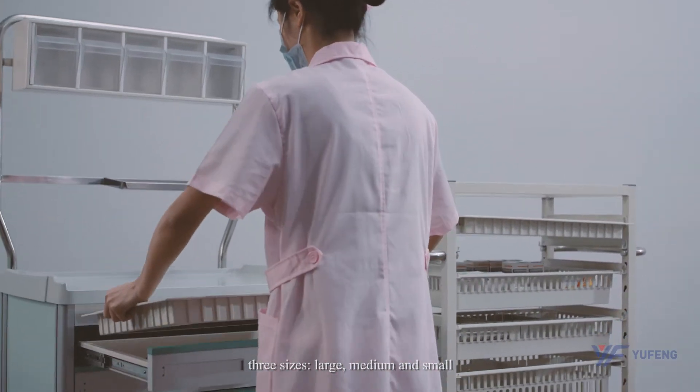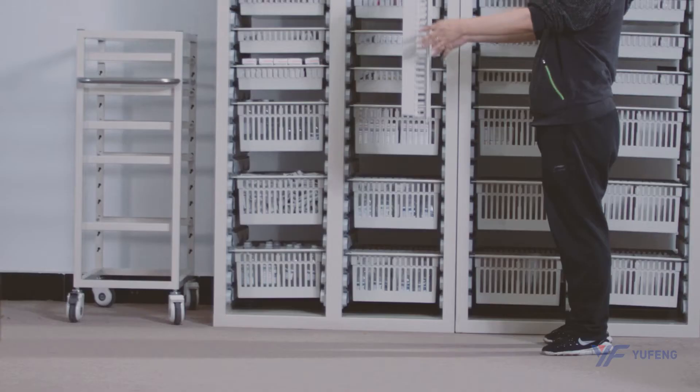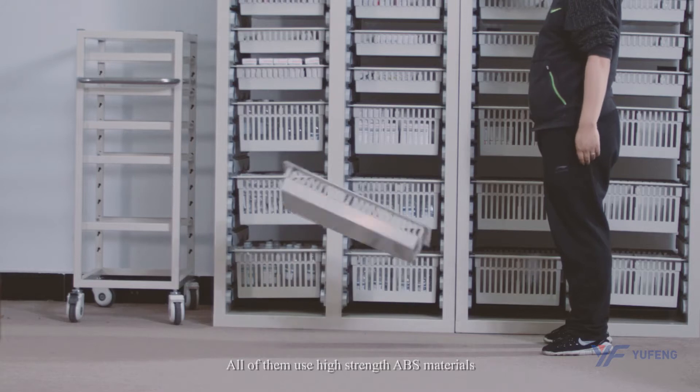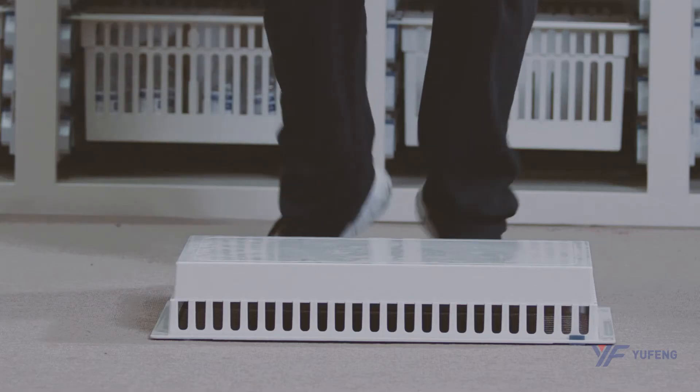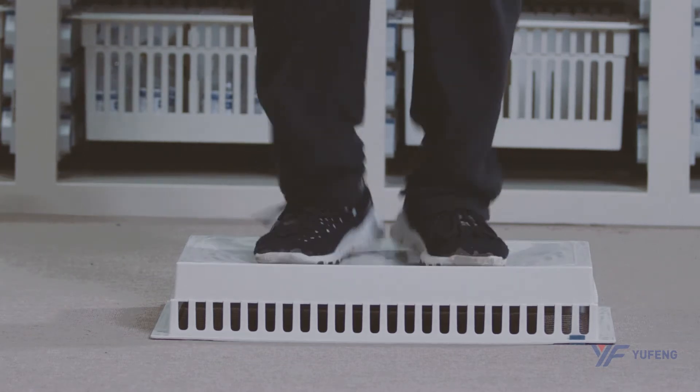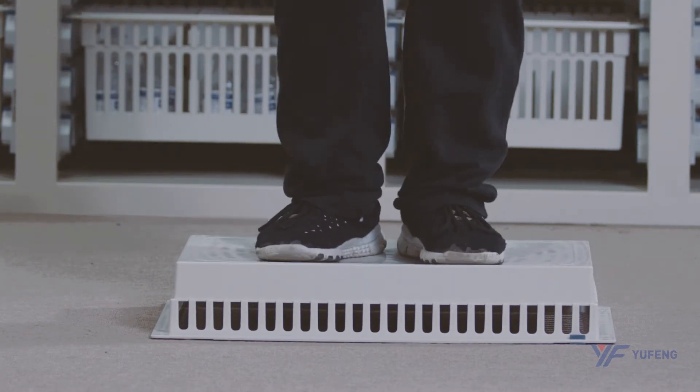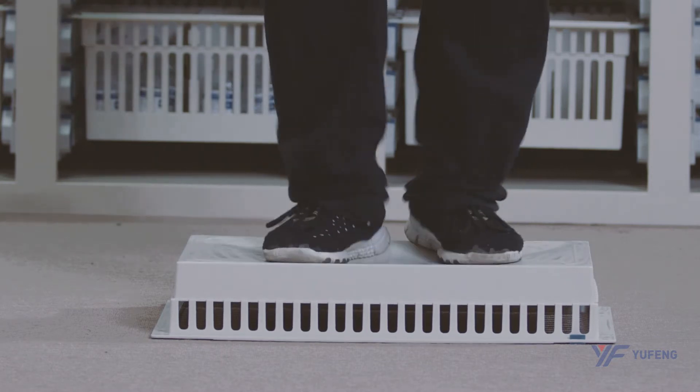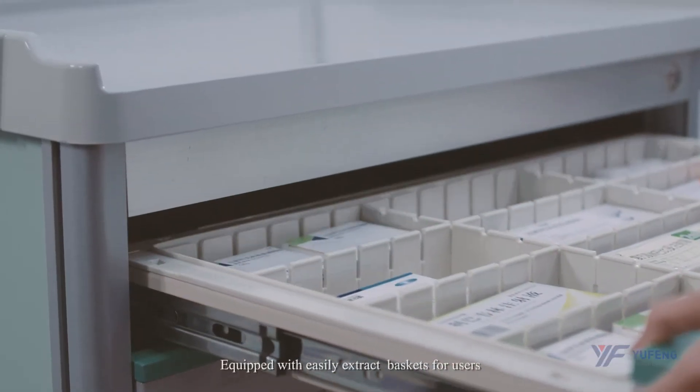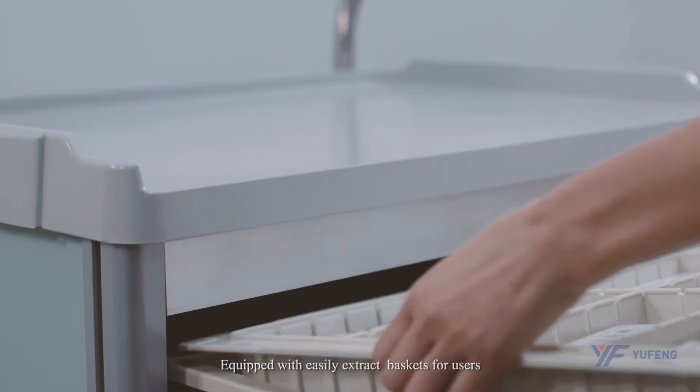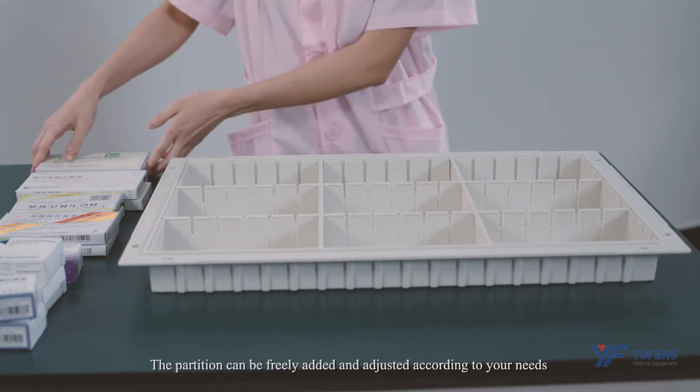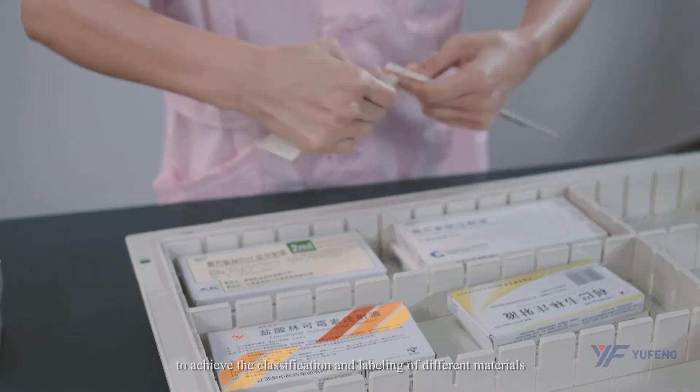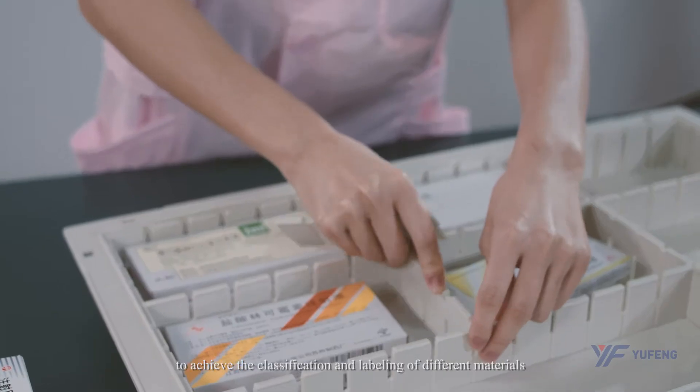into three sizes: large, medium, and small. All of them use high-strength ABS materials and are equipped with easily extracted baskets. The partitions can be freely added and adjusted according to your needs to achieve classification and labeling of different materials.